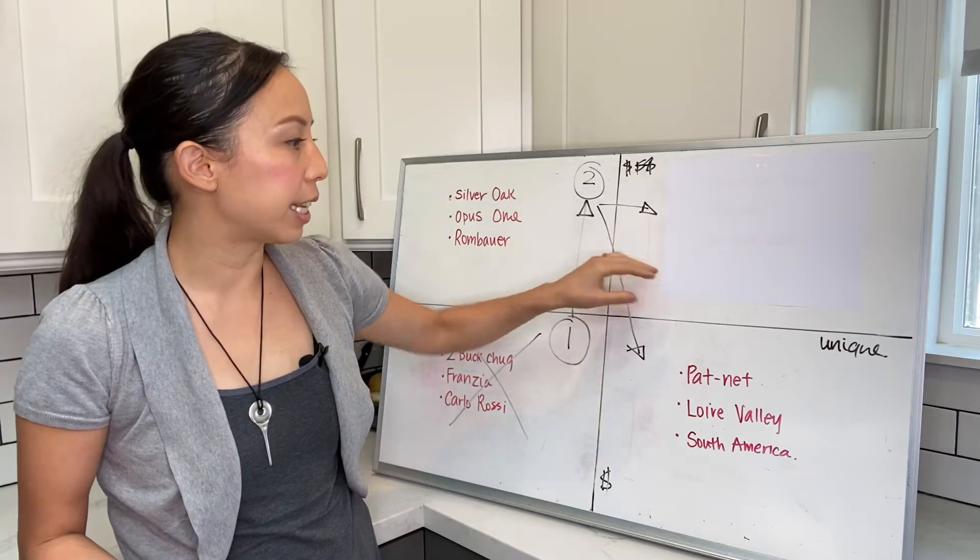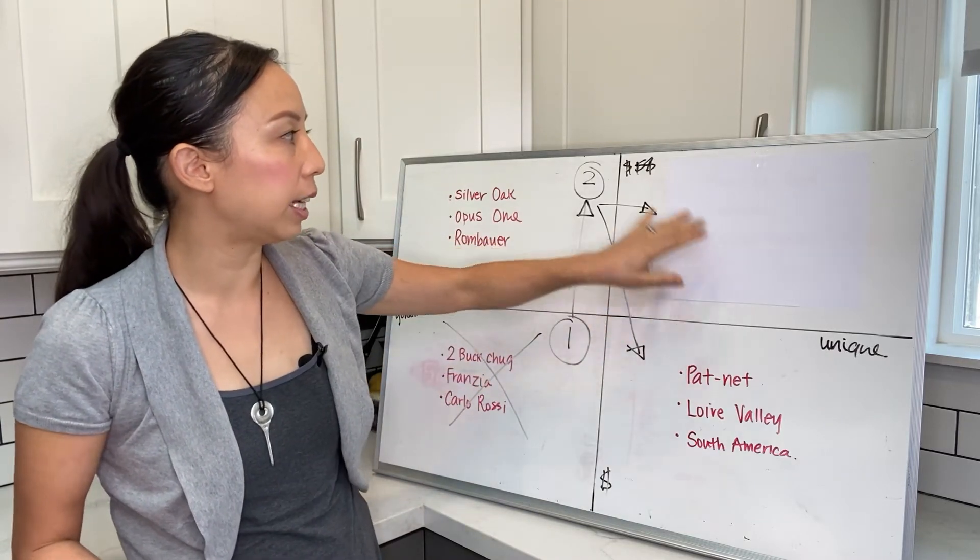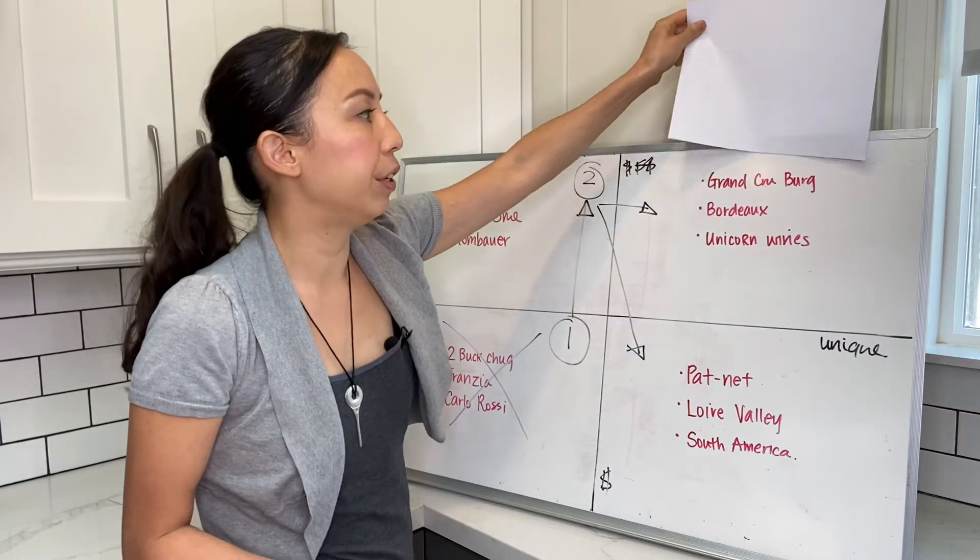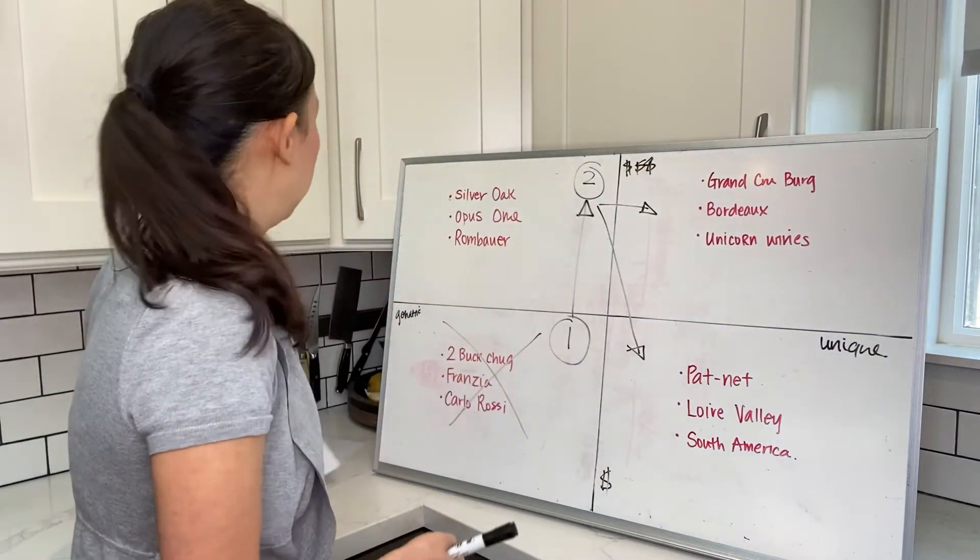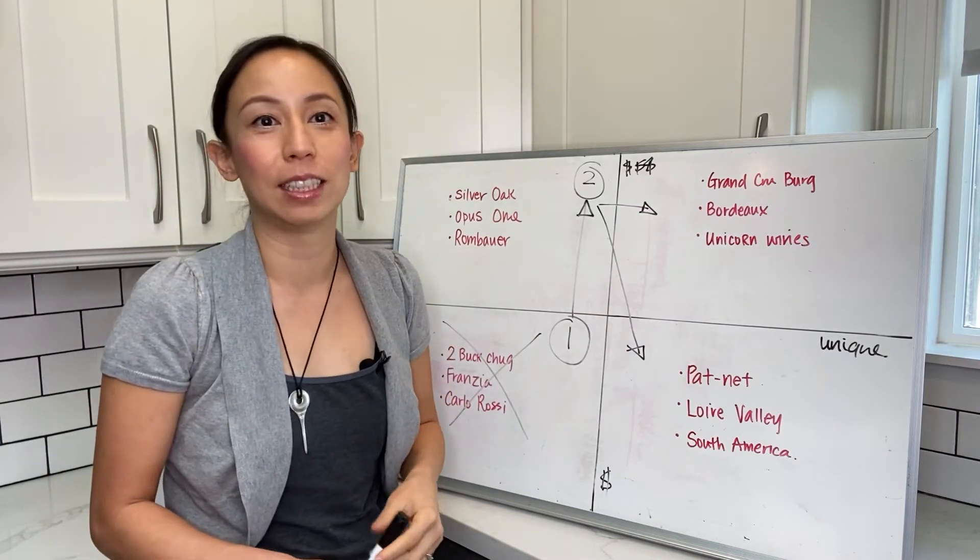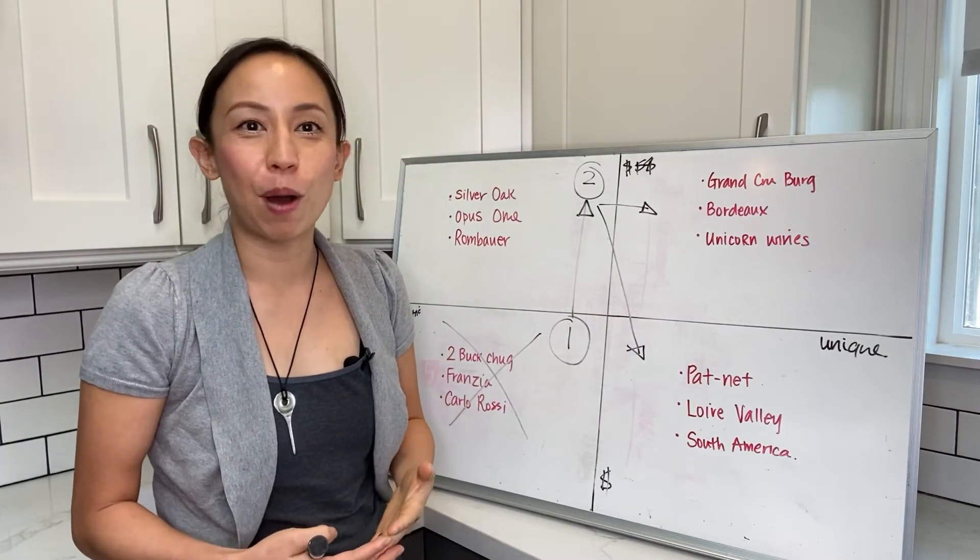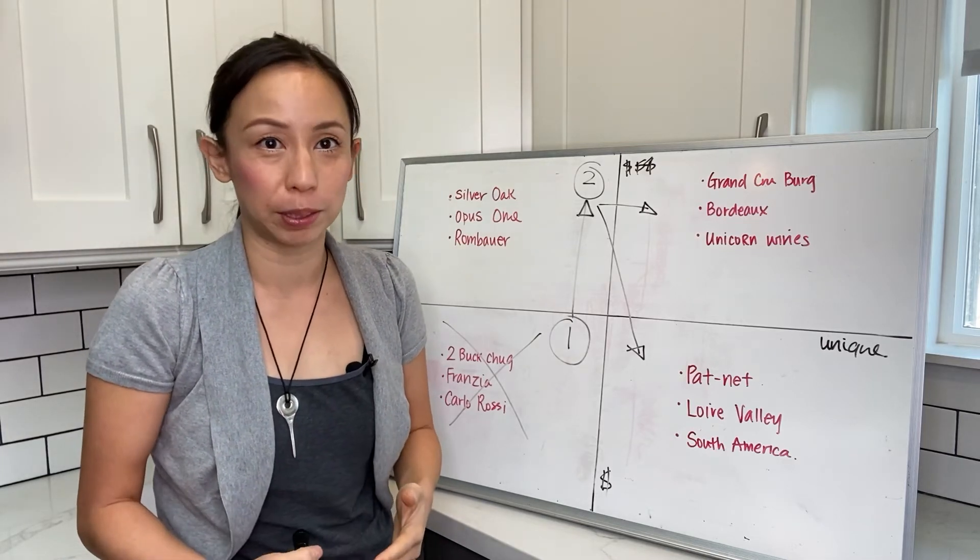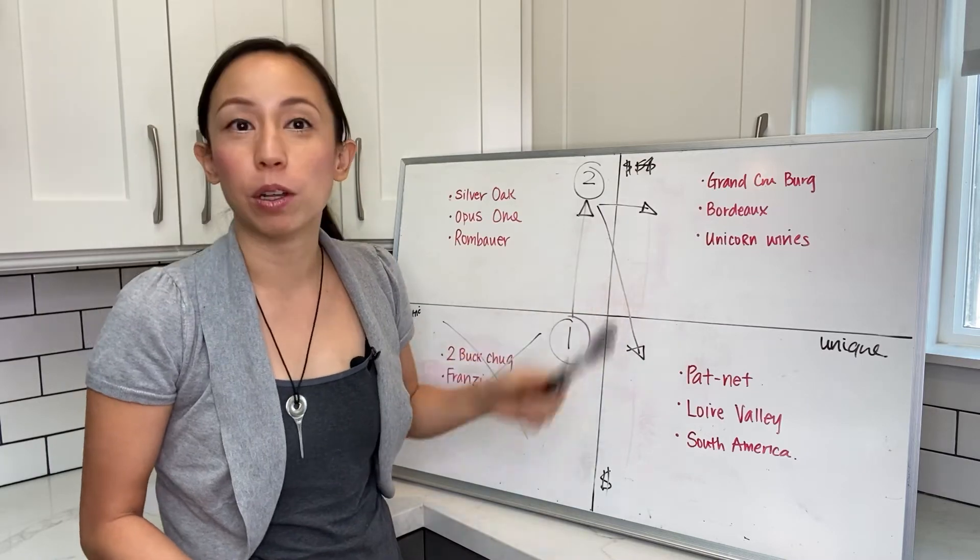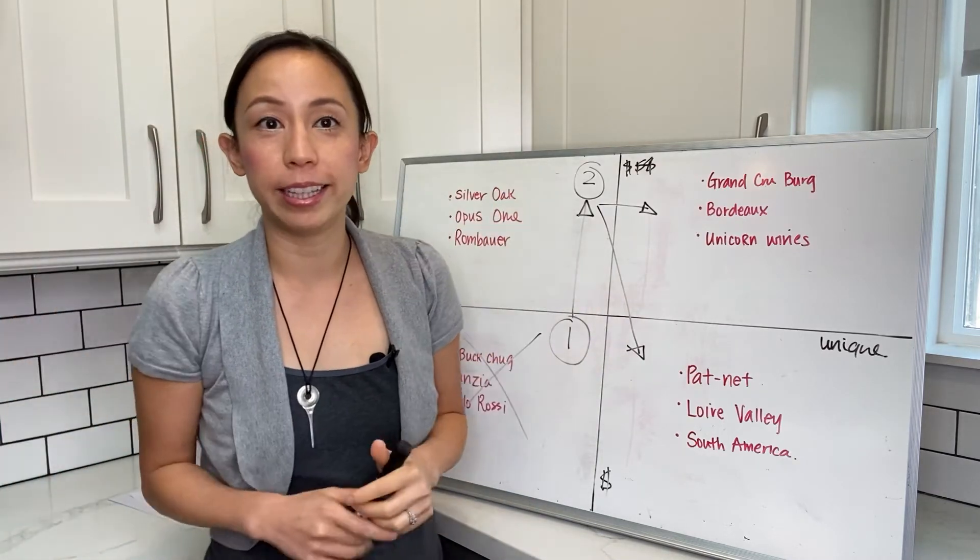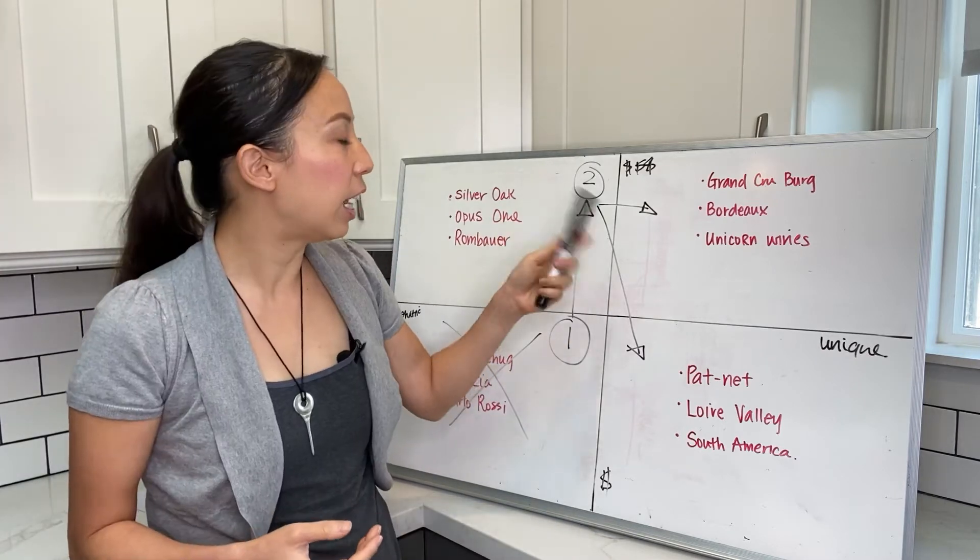Then we jump into the last category, which is unique and also very high-end and expensive. This is the category that I very much specialize in. This is where you're looking at Grand Cru Burgundy, wines that only make literally three to six hundred bottles every vintage, so it's very hard to find, very unique, and very expensive at the same time. Also Bordeaux—the left bank Bordeaux that you've heard of, the big names like Lafite, Latour.